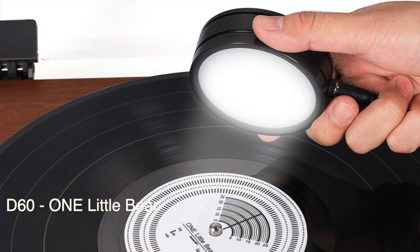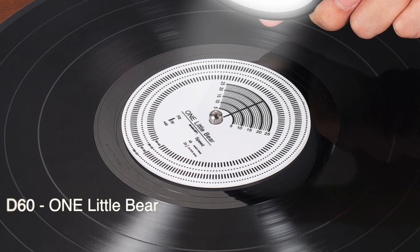As I said, there's always the problem that the stroboscopic light is too expensive. Well, now there is a good solution. The D60 by One Little Bear. A perfect little jewel that will help us from now on, all of us, at a very good price. Let's take a look.